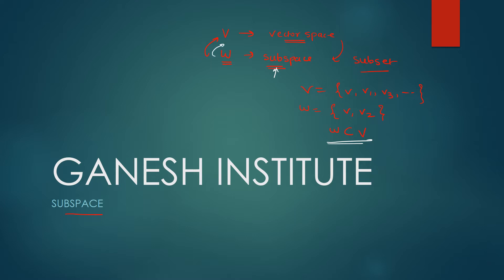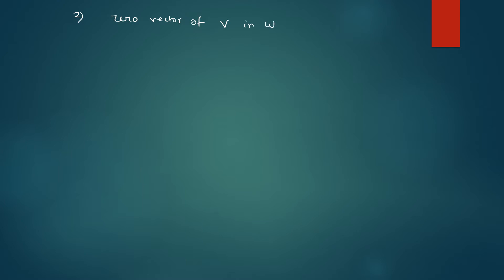The second property is that the zero vector of V should be present in W. What is a zero vector? Let's say V1 is an element of V. If you add V1 with something and you get the same element back, that something is the zero vector. So that zero vector element should be present in W.